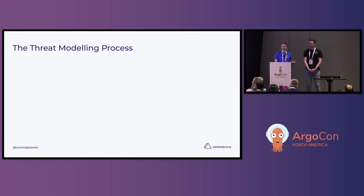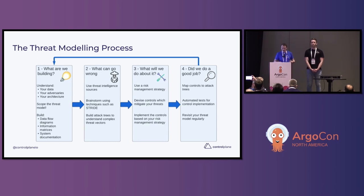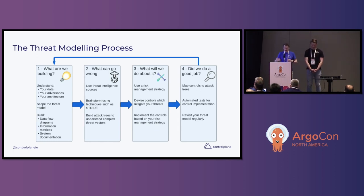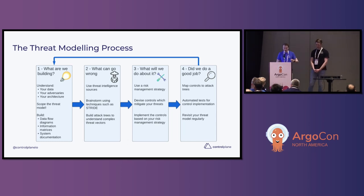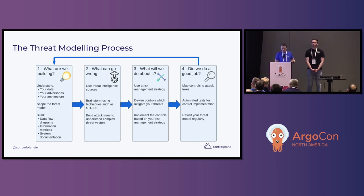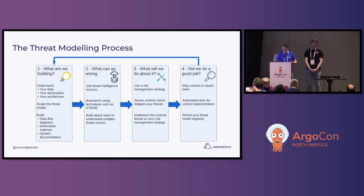The threat modeling process follows a simple four-step process espoused by Adam Shostack and co. The first question, 'What are we building?', involves understanding our data, our use cases, our adversaries, and our architecture. Artifacts that can help us here include data flow diagrams, system architecture diagrams, and information flow matrices — looking at the system from different viewpoints can often elucidate threats which might otherwise be missed. 'What can go wrong?' is the next step. This is where we catastrophize, using threat intelligence sources as inspiration. We can use brainstorming techniques such as STRIDE to make sure we're not missing any threats, and we can put all of this together in attack trees to see how an attacker would get from some level of access or credentials to actually compromising data.